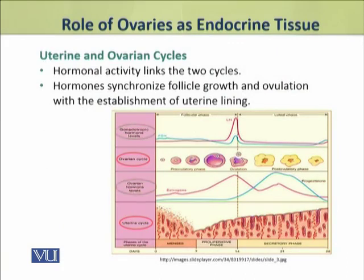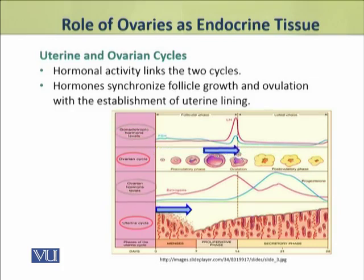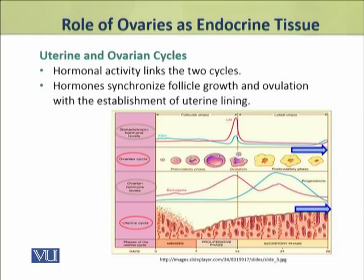These hormones — estrogen and progesterone — synchronize the follicle growth and ovulation with the establishment of the uterine lining. In the ovarian cycle, follicle growth and ovulation are occurring, and in parallel, the uterine lining is growing in the uterine cycle. This synchronization is carried out by progesterone and estrogen.